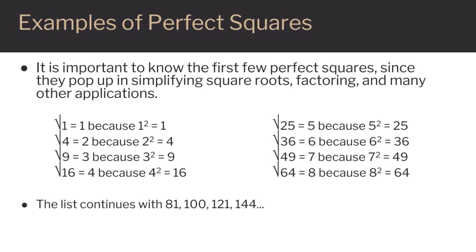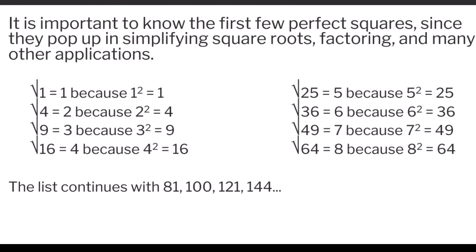1 is unusual because it's its own square root. The square root of 4 equals 2, because 2 squared, or 2 times 2, equals 4. The square root of 9 equals 3, because 3 squared, or 3 times 3, equals 9. You can see the rest on this list.